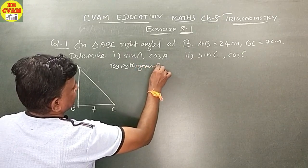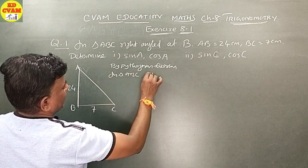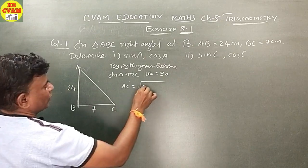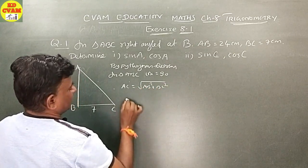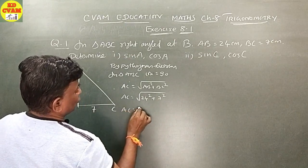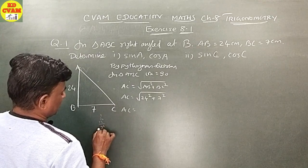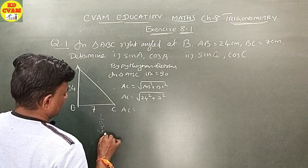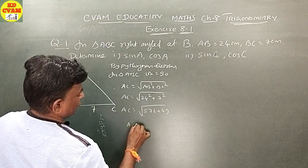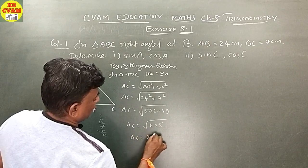By Pythagoras theorem, in triangle ABC, angle B is equal to 90. Therefore, AC is equal to square root of AB square plus BC square. That is, AC is equal to square root of 24 square plus 7 square. AC equals square root of 576 plus 49, which equals square root of 625. AC is equal to 25 centimeter.